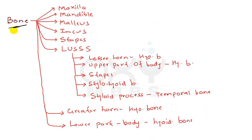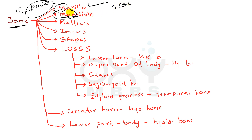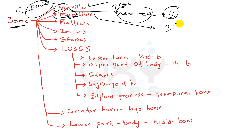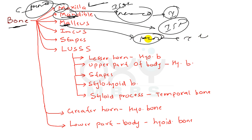Now coming to bones. The first one is the maxilla — M means mono, mono means number one, so maxilla is derived from the first pharyngeal arch. Similarly, 'men' means mono, so the mandible is also derived from the first pharyngeal arch. Likewise, 'may' means mono and the malleus and incus always remain together, so malleus and incus are also derived from the first pharyngeal arch.